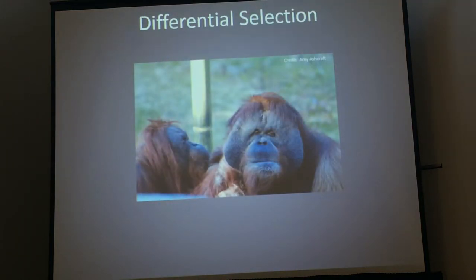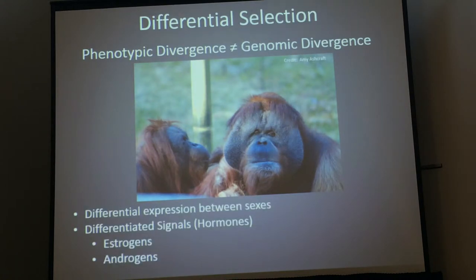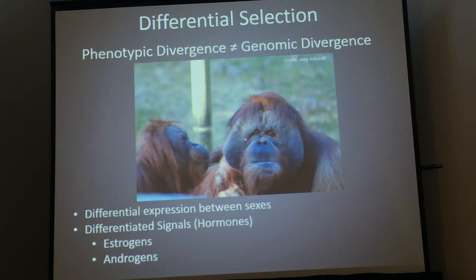We have differential selection in males and females because males are growing large testes and have exaggerated traits, like these orangutans with a large face flap that the female clearly doesn't have. But just because there's phenotypic divergence doesn't mean there's a lot of genomic divergence. In fact, if you look at the autosomes, males and females would be near indistinguishable. The main difference is usually attributed to differential expression between the sexes, with sex hormones contributing to those expressions. A trait this male orangutan has, the female probably also has the gene for — but the signal is what determines which one expresses it.